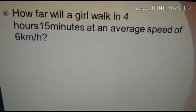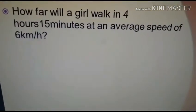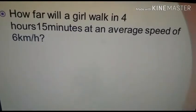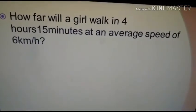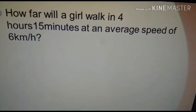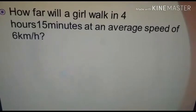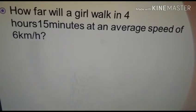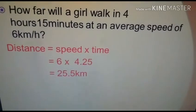Look at the next question. How far will a girl walk in 4 hours 15 minutes at an average speed of 6 km per hour? Here, the time is given 4 hours 15 minutes and the average speed is given 6 km per hour. We want to find out the distance. How to calculate the distance? Distance is speed multiplied by time.